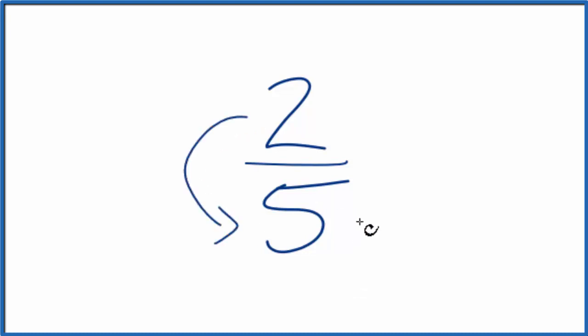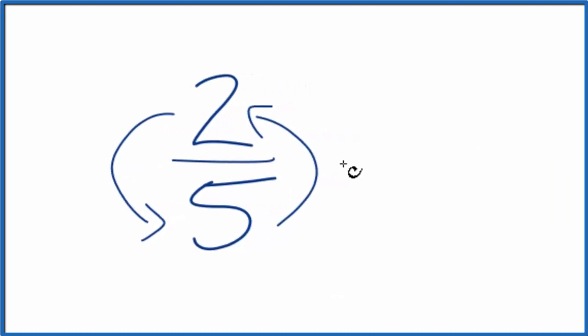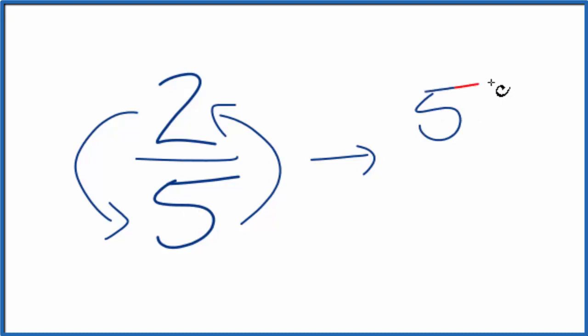We'll move the numerator down here, the denominator up here. That'll give us 5 on top, 2 on the bottom. So the reciprocal of two-fifths is five-halves.